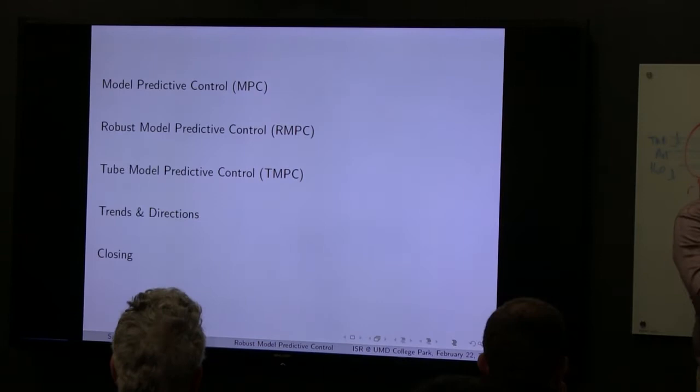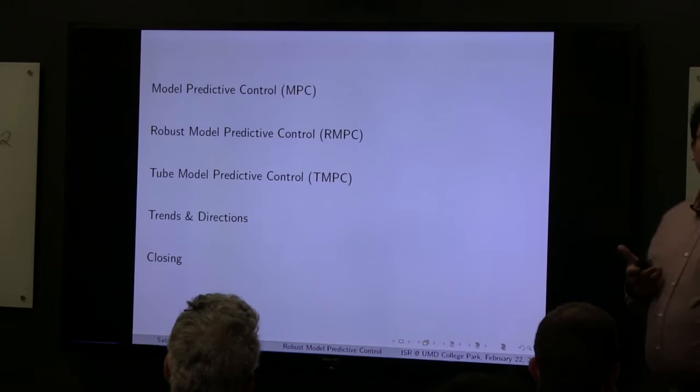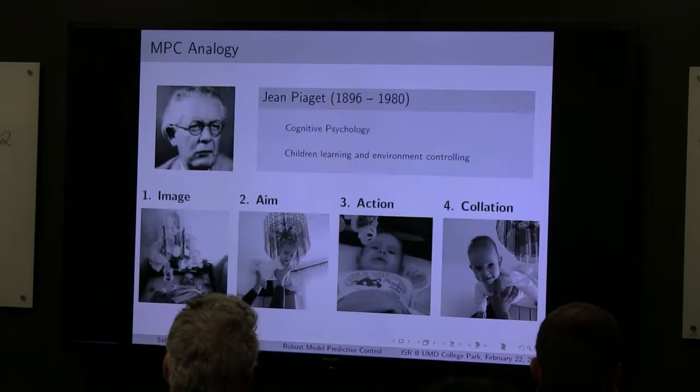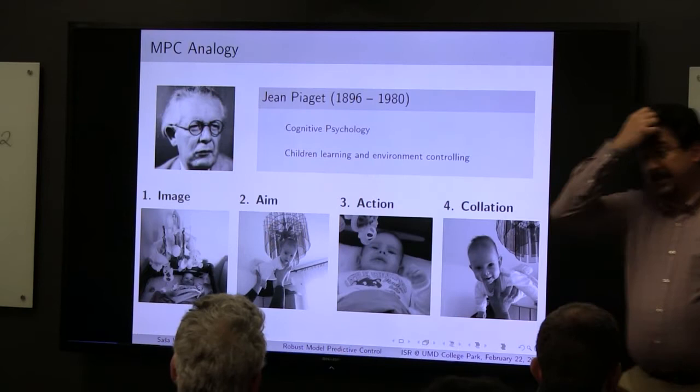Let's start. If I want to talk about robust model predictive control, I do need to say what model predictive control is, and then the focus will really be on model predictive control — again, very descriptive. So, how do you explain model predictive control to somebody who has never done any control or hasn't studied any math at all?